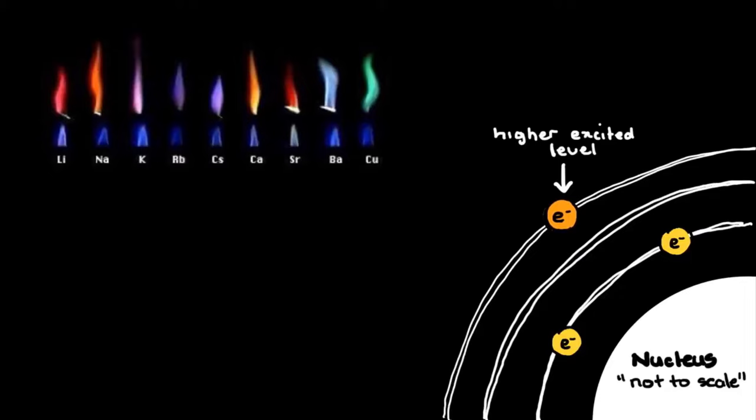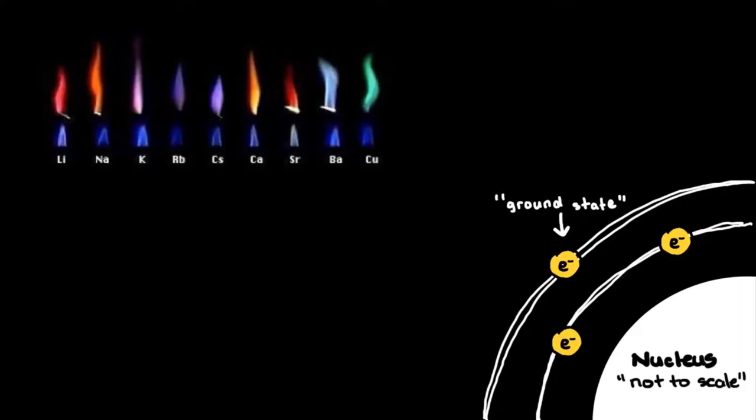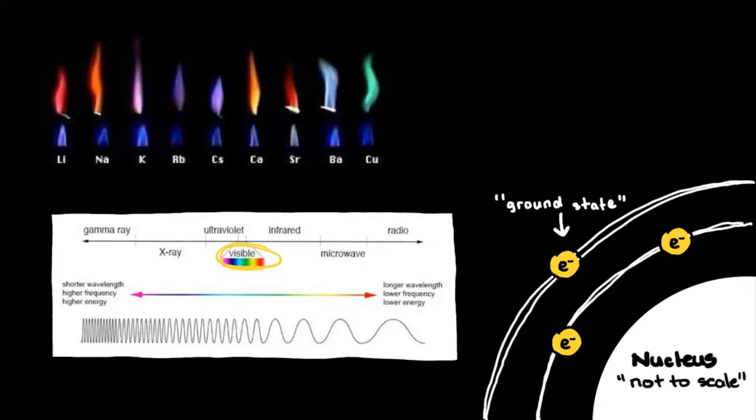Excited electrons are unstable. And as they fall back to lower levels, they emit light at various characteristic frequencies. Some of these frequencies correspond to the visible region of the electromagnetic spectrum. We see the result of the emission of these colored photons.